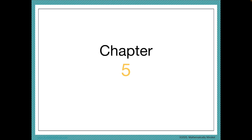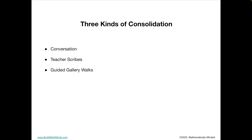Now let's dig into chapter five, which is all about how to consolidate the task. There are three kinds of consolidations the book talks about: one is conversation, the second is that the teacher scribes, and the third is guided gallery walks. Conversation is really useful when talking about big ideas and general strategies that came out of student activity.